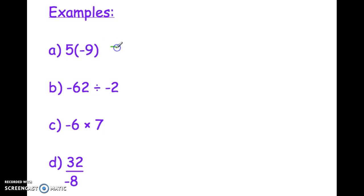5 times -9, you should get -45. The signs are different. We have a positive and a negative, so we get a negative answer.